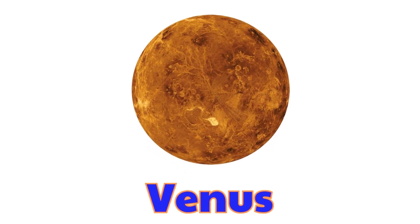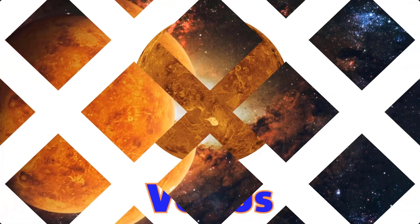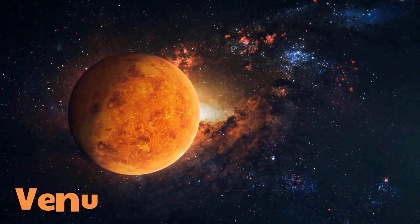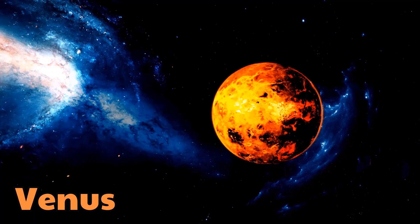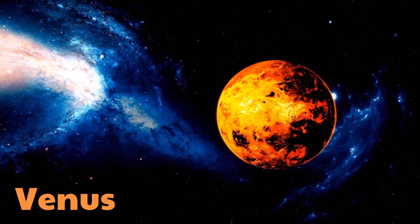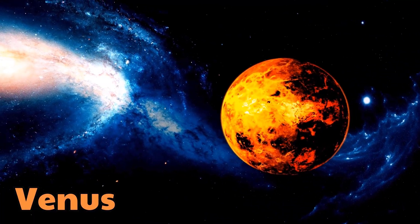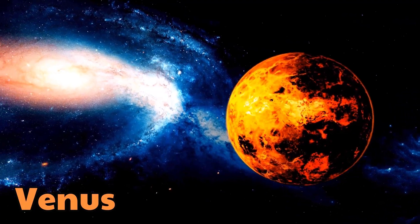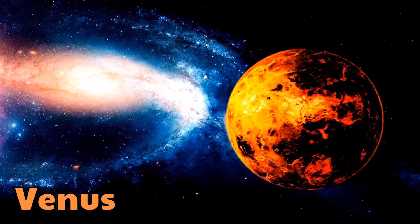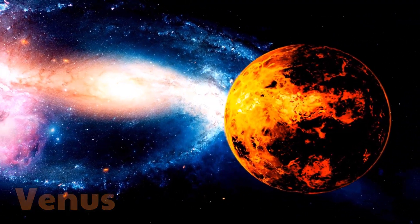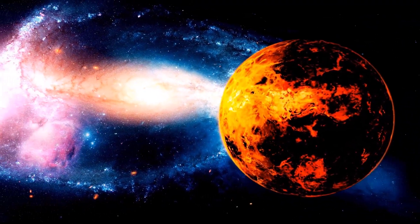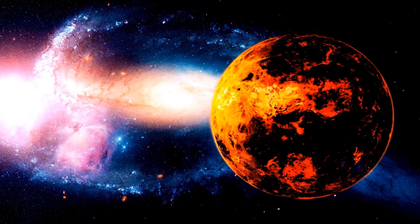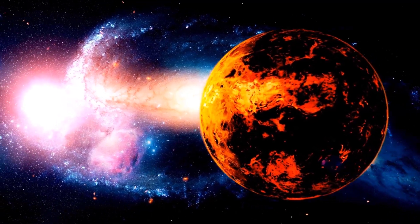Venus. This is Venus. Venus is the second planet from the sun. It is covered by thick clouds that trap heat, making it the hottest planet in the solar system.